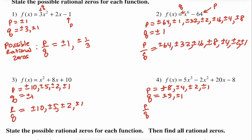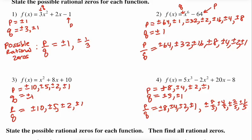Number 4 has some interesting possibilities. Dividing the P list by 1 gives the original list: 8, 4, 2, and 1. But dividing by 5 gives new fractions: 8 fifths, 4 fifths, 2 fifths, and 1 fifth. These are just a list of possibilities you'd want to try to find a particular zero. This narrows our focus so we don't have to try any random number on the number line — we start with this particular list.